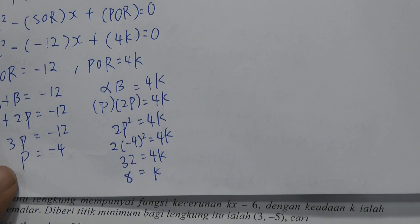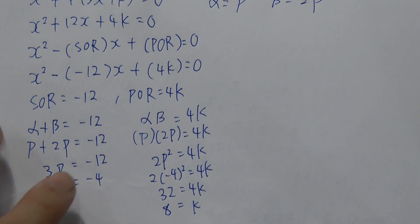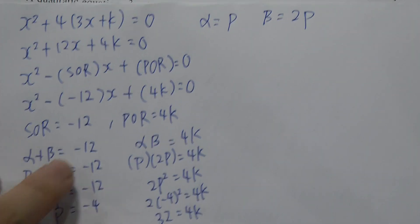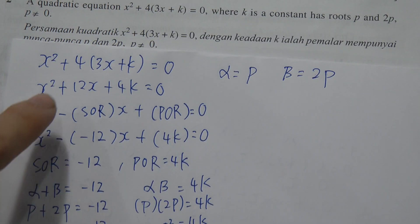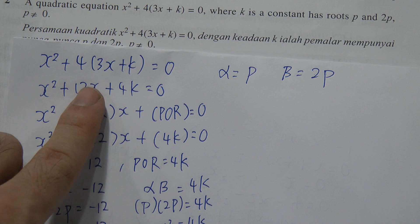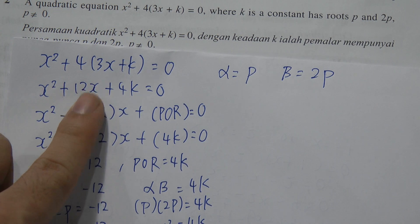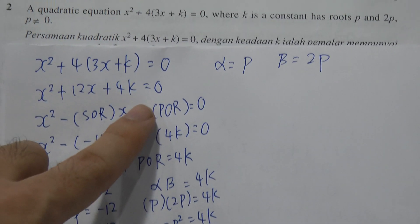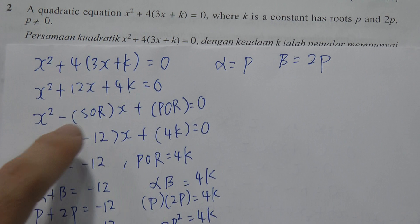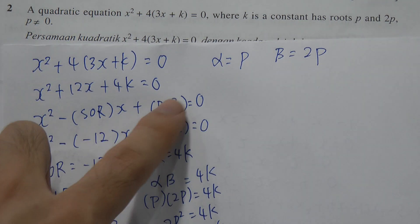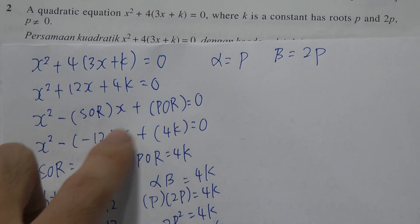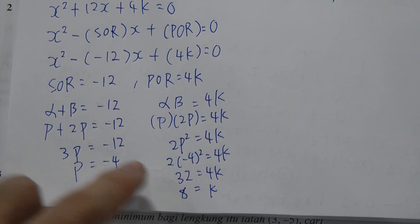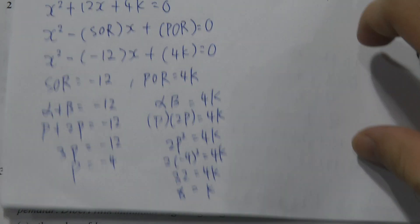So p = -4 and k = 8 by solving the equation. This question is not really hard — you just need to understand what 'roots' means and remember the sum and product of roots formula.